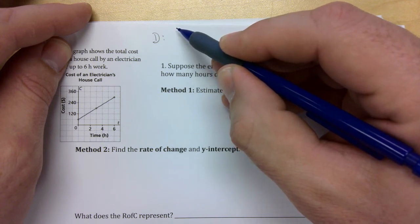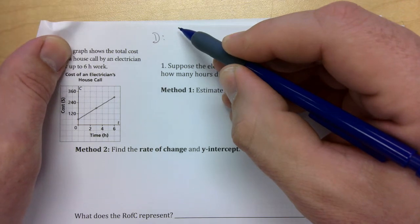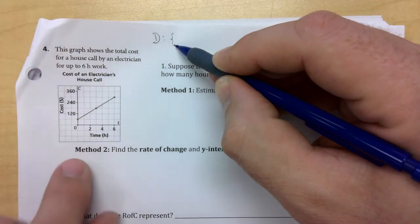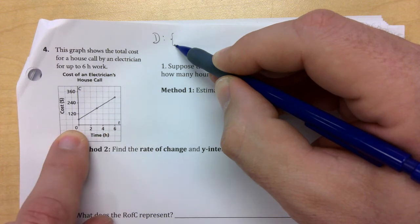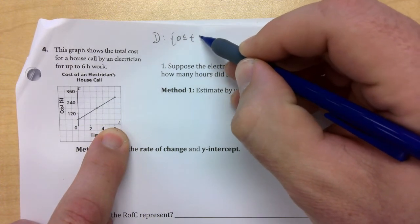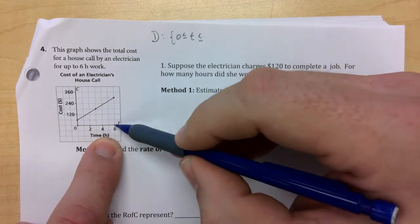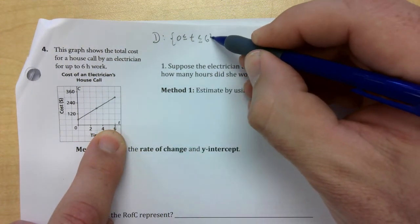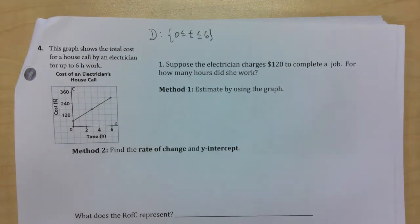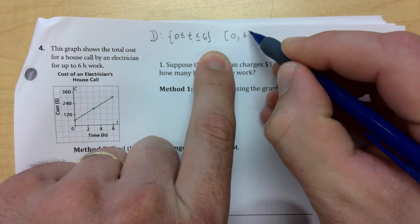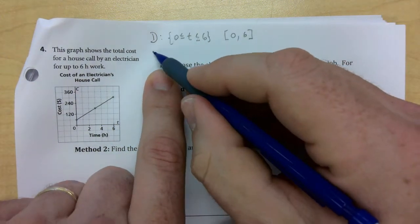Some of you are not being careful to put the lowest value first and then the highest. For domain, my x-values go from zero — included because it's a solid dot — all the way up to six. Look at a line from left to right for domain, and bottom to top for range. So the domain is zero to six, both inclusive, in interval notation.